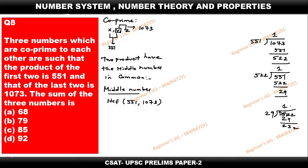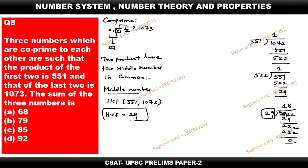29 exactly divides the previous remainder, which means it leaves remainder 0. The number which gives remainder 0 is the HCF. Therefore, HCF of 551 and 1073 is equal to 29. Please learn this HCF concept carefully.